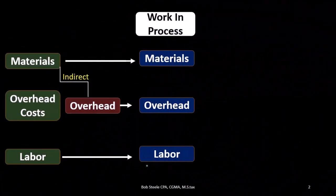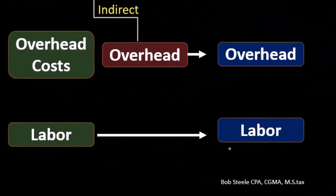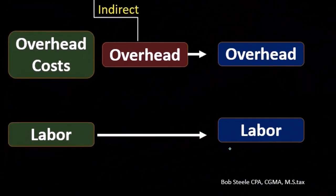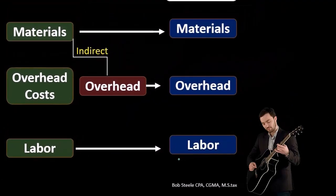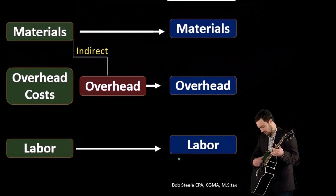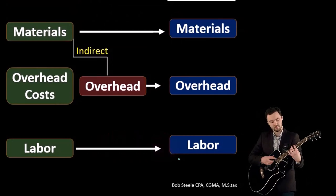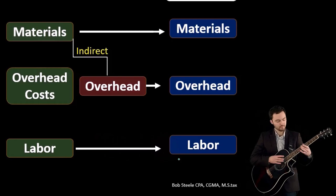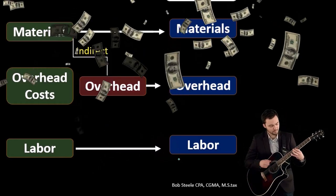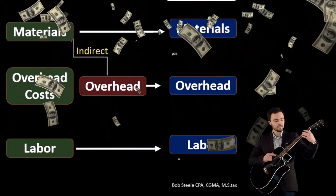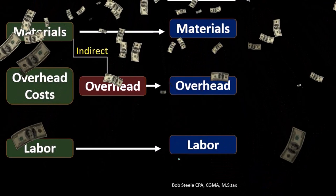We'll talk through that as we work through the job cost system. For labor, same thing — we're going to take the labor and assign it to Work in Process. That's going to be direct labor. Anytime someone is working on a particular guitar, it's pretty easy to see which job that person is working on and therefore assign their cost directly to Work in Process, backed up by job cost sheets.